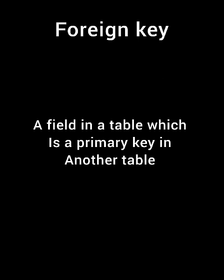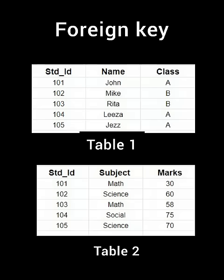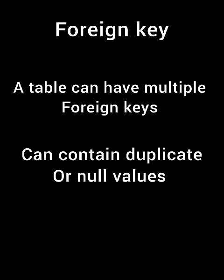A foreign key is a field in a table which is a primary key in another table. Consider these two tables: the student_id column in table 2 is a primary key in table 1, so the student_id is a foreign key in table 2. A table can have multiple foreign keys, and it can also contain duplicate and null values.